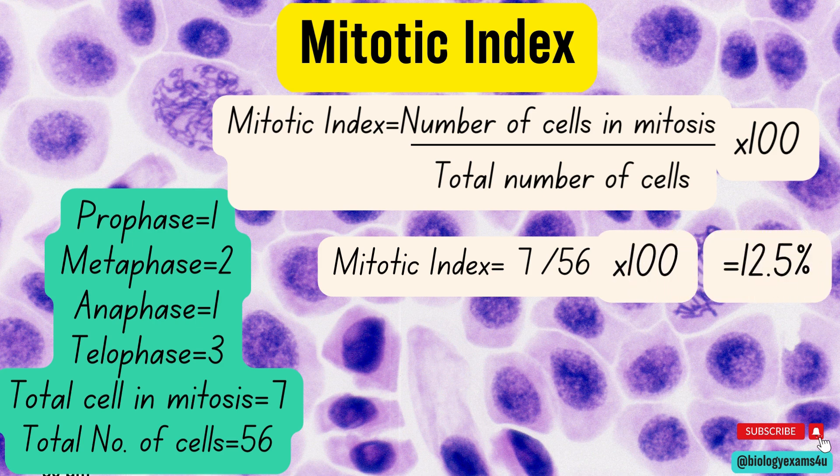We need to take at least three fields and calculate the average mitotic index. It also depends on the specimens. For histology slides, the average of 10 fields at high power — 400x magnification — is the standard.